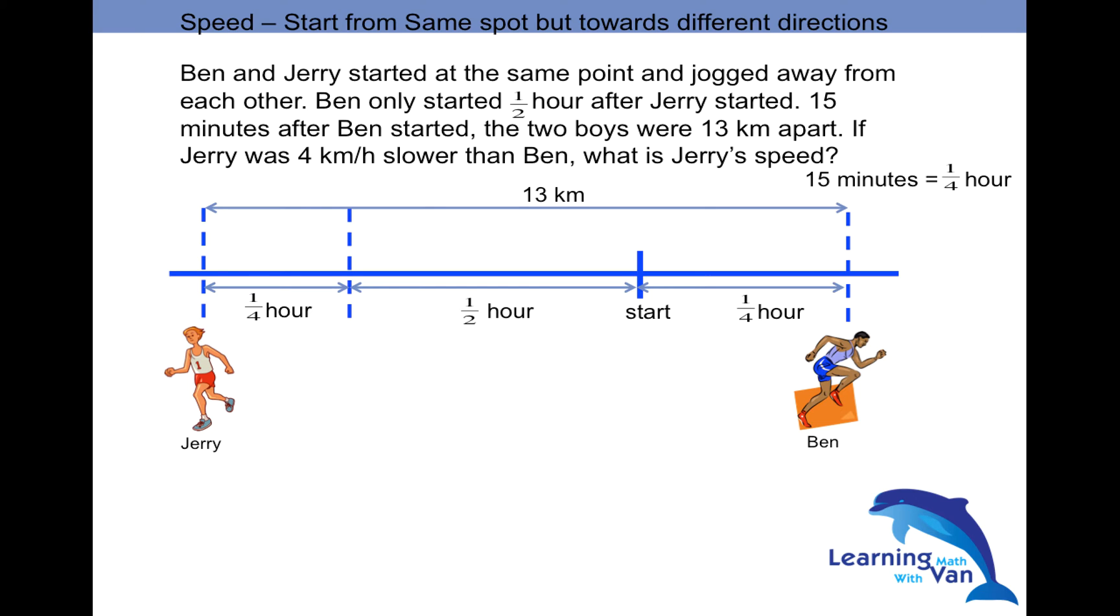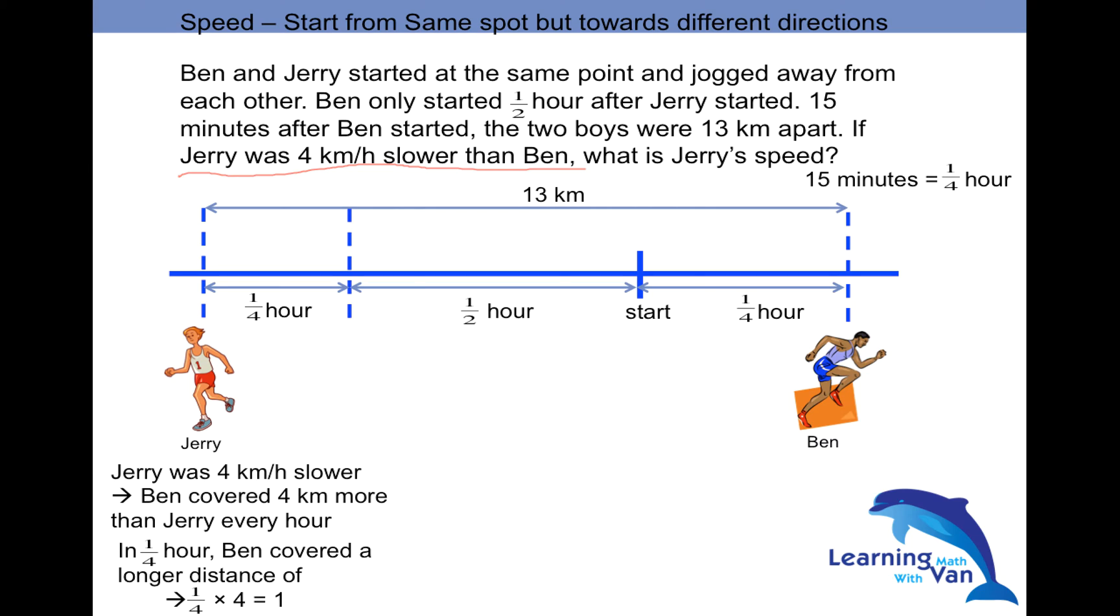So look at this statement right now. Let's change to Ben. Jerry was 4 kilometers per hour slower than Ben. And if he is faster, given the same number of hours, Ben would have covered a further distance. And how much further? So if Jerry was 4 kilometers per hour slower, Ben would have covered 4 kilometers more than Jerry for every 1 hour. But in this case, they didn't travel that much. They only travel for 1 quarter hour. So in 1 quarter hour, Ben would have covered a longer distance of 1 quarter times 4, which is 1 kilometers.